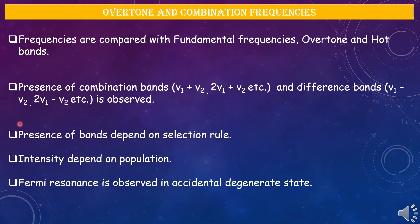Sometimes intensities of overtone and combination bands may be enhanced due to resonance occurring because of the comparable energy of an overtone and a combination band, known as an accidental degenerate state. This kind of resonance is known as Fermi resonance.